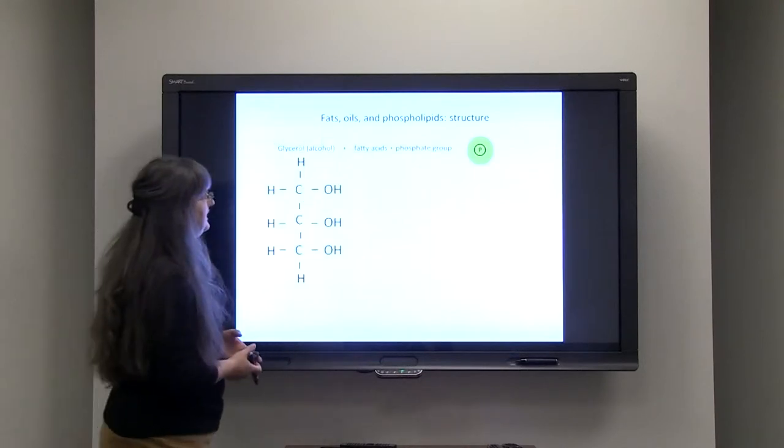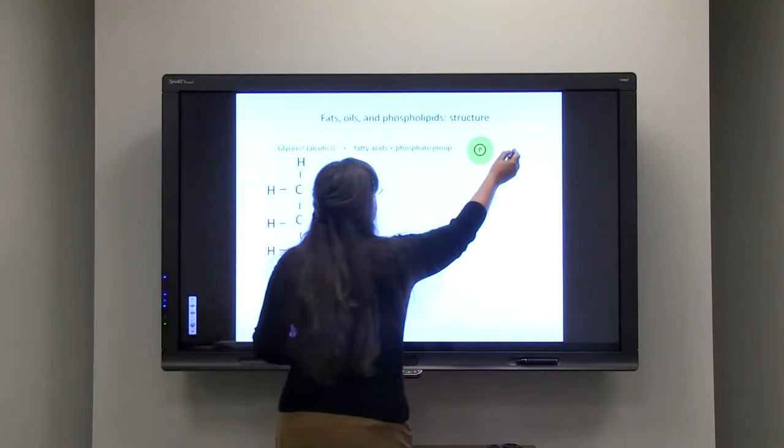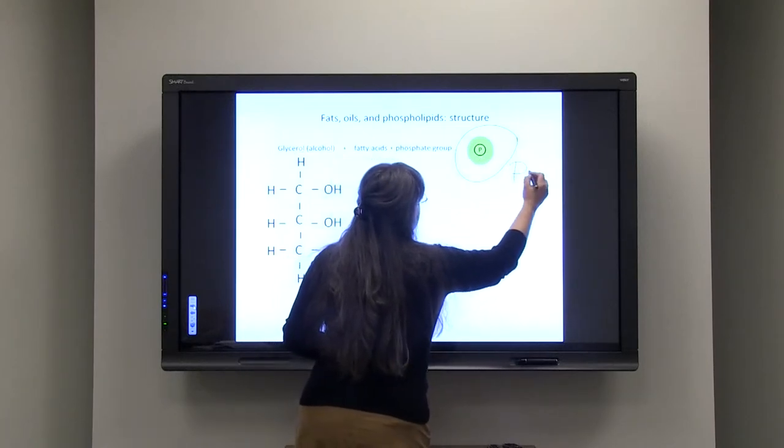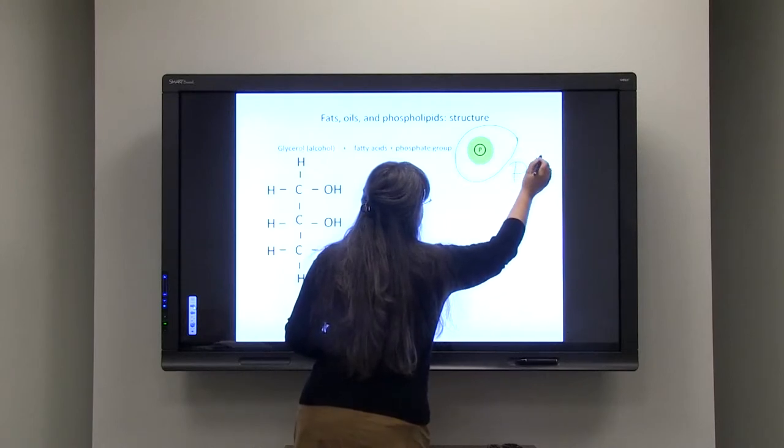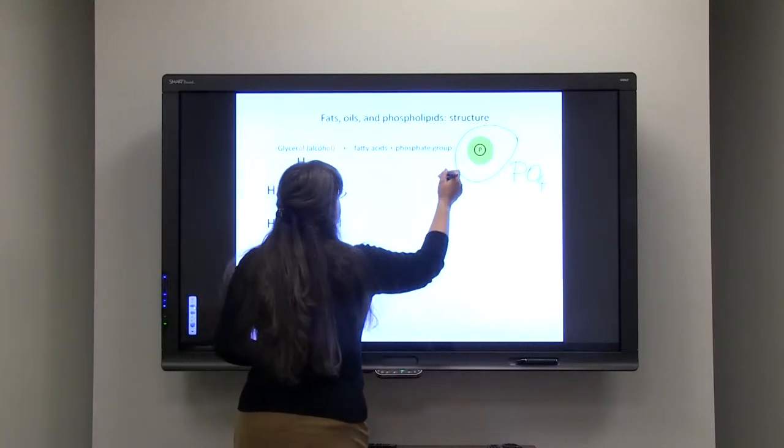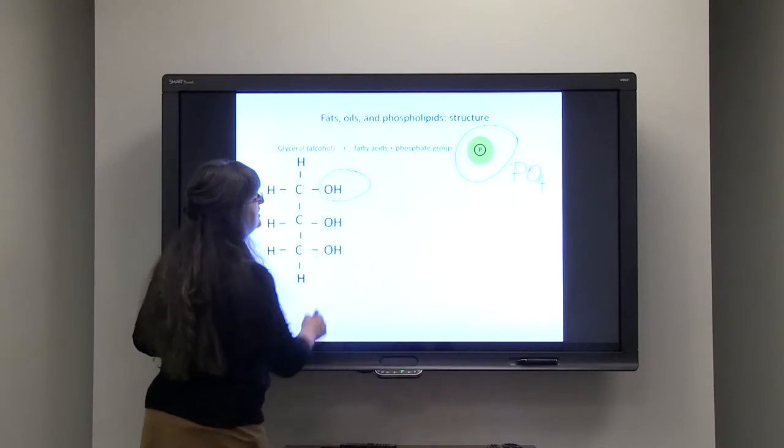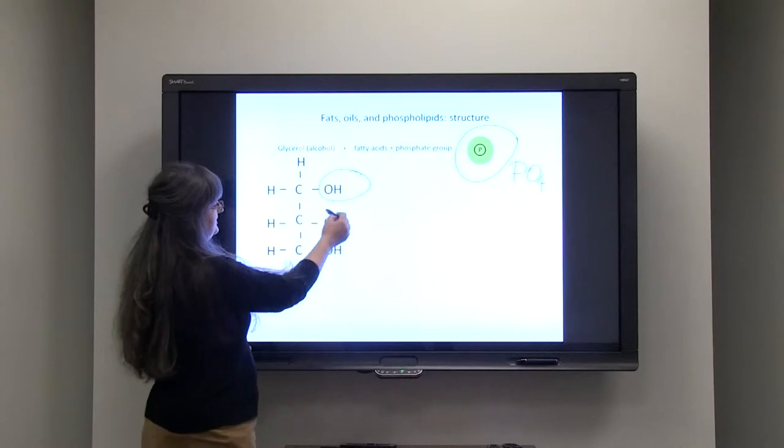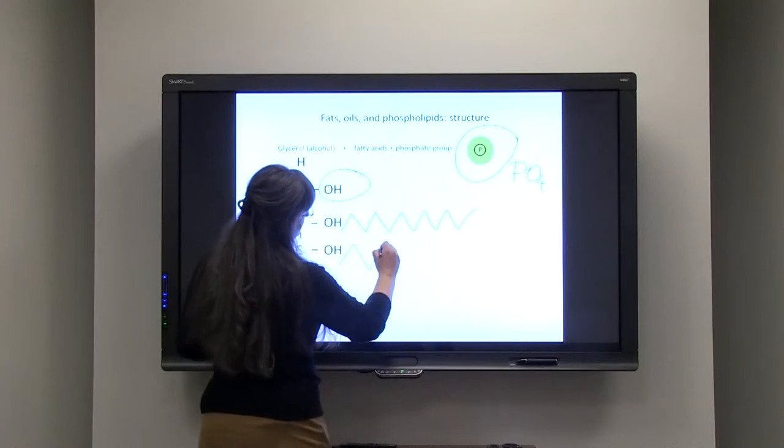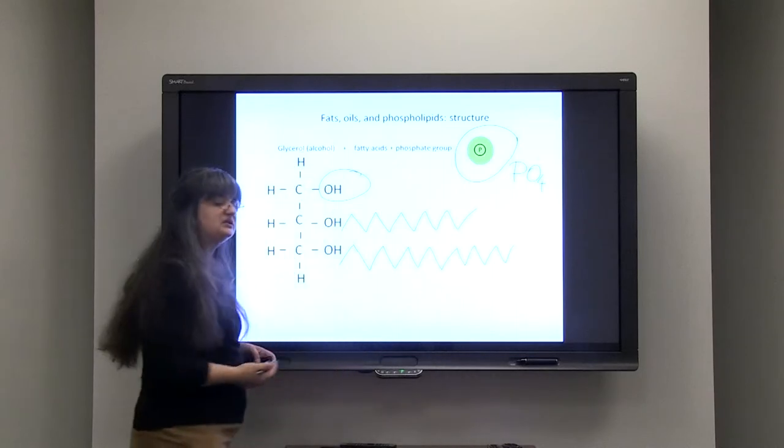Now, in the case of phospholipids, we have a phosphate group that is connected to the first. So phosphate group, we usually write like this, but it's actually an ion that has negative charge, and it's PO4, not just phosphate, it's not just phosphorus itself. So this phosphate group is connected to the first of the carbon atoms, and the rest of them have one or two different types of long-chain fatty acids.